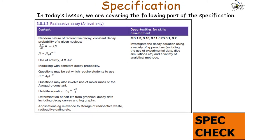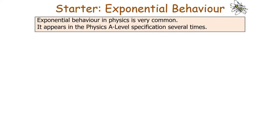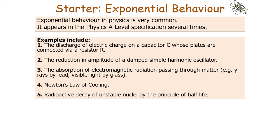In today's lesson we're going to be covering specification section 3.8.1.3, radioactive decay. Exponential behaviour in physics is actually very common, appearing in the A-level specification several times. Examples include the discharge of electrical charge on a capacitor, the reduction in amplitude of a damped simple harmonic oscillator, the absorption of electromagnetic radiation passing through matter such as gamma rays through lead, and the radioactive decay of unstable nuclei by the principle of half-life.